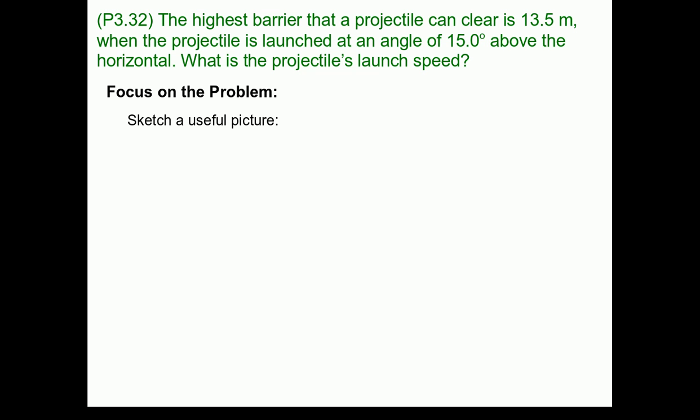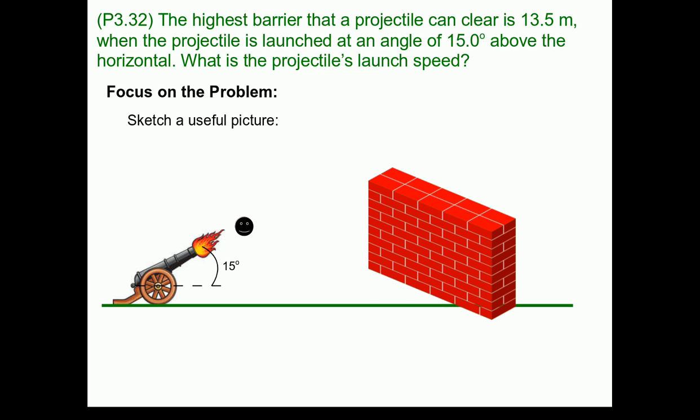Let's begin by focusing on the problem and sketching a useful picture. So we have the source of our projectile, in this case I've chosen a little cannon, which is launching our ball at 15 degrees above the horizontal. The problem states that the highest barrier that this cannonball can clear is 13.5 meters with this launch angle.